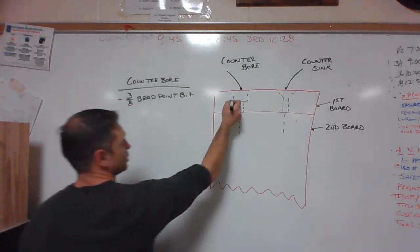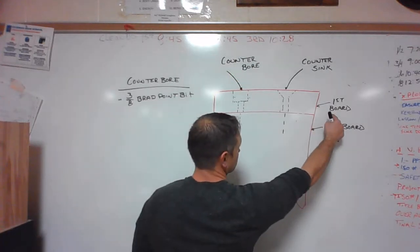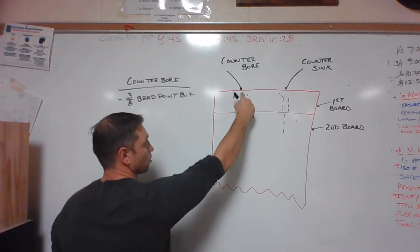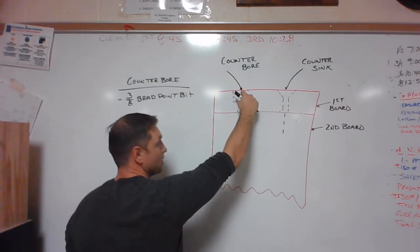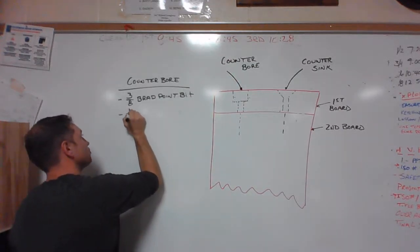It's the diameter at which it's going to be drilled and the depth down. Once again, this is our first board. Based on my sketch here, this comes halfway through the first board. So we're going to drill that counter bore hole down halfway through the first board.